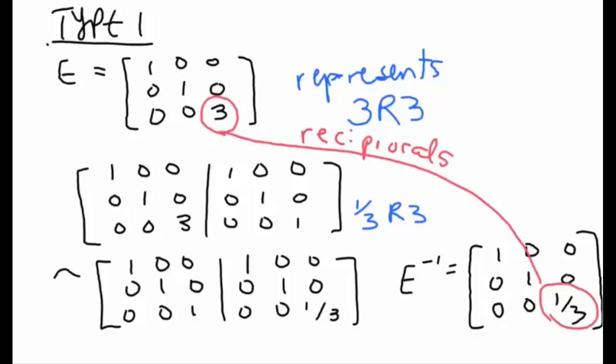You're going to find that if you want to find the inverse of a type 1 elementary matrix, what we do is we find the number on the main diagonal that's not 1 and we take its reciprocal. So if you ever have a type 1 elementary matrix you scan the main diagonal for the number that's not 1 and to get the inverse we take the reciprocal of that number.